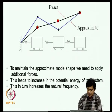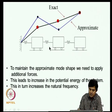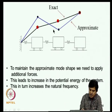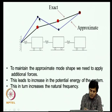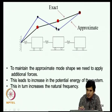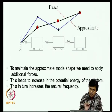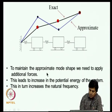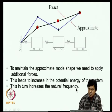Physically, the bounding occurs because if one uses an approximate mode shape, additional forces must be supplied to maintain that shape as a normal mode. These additional forces do extra work and contribute to the potential energy, causing the natural frequency estimate to be higher. This explains why Rayleigh's quotient always provides an upper bound on the first natural frequency.